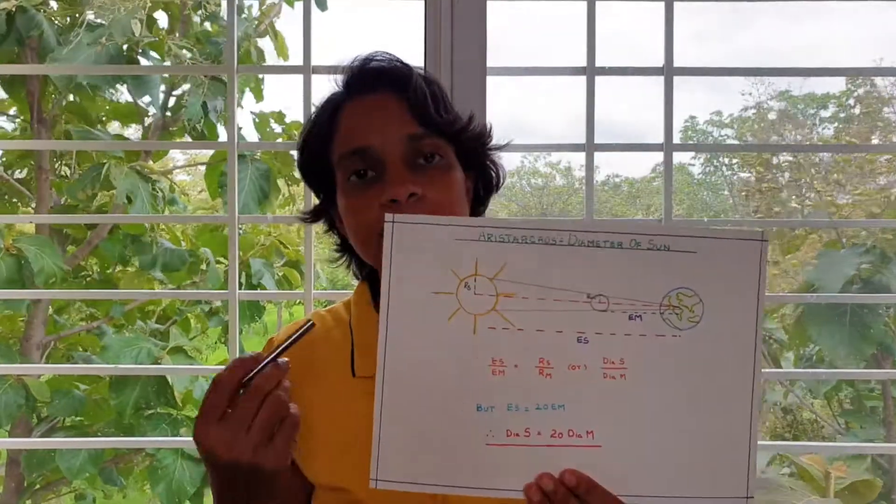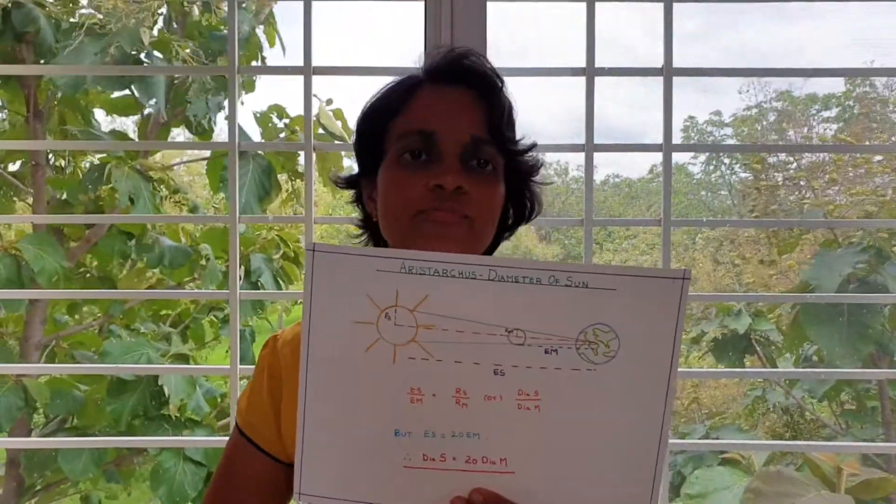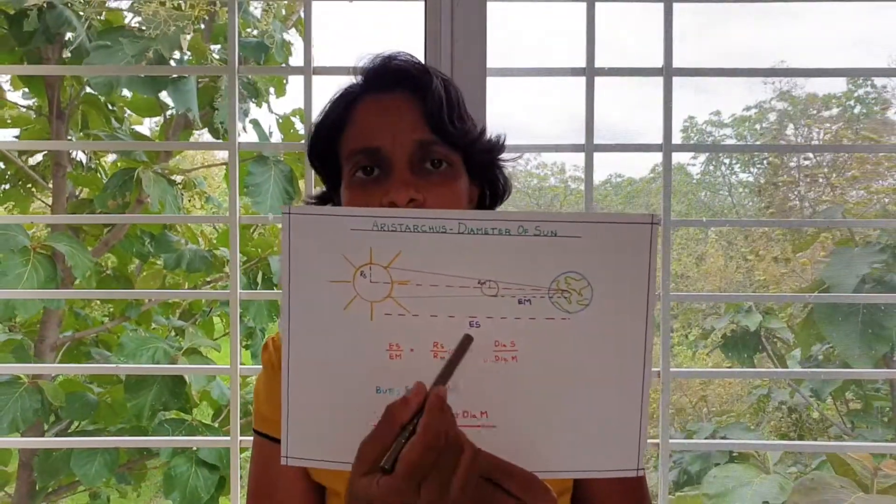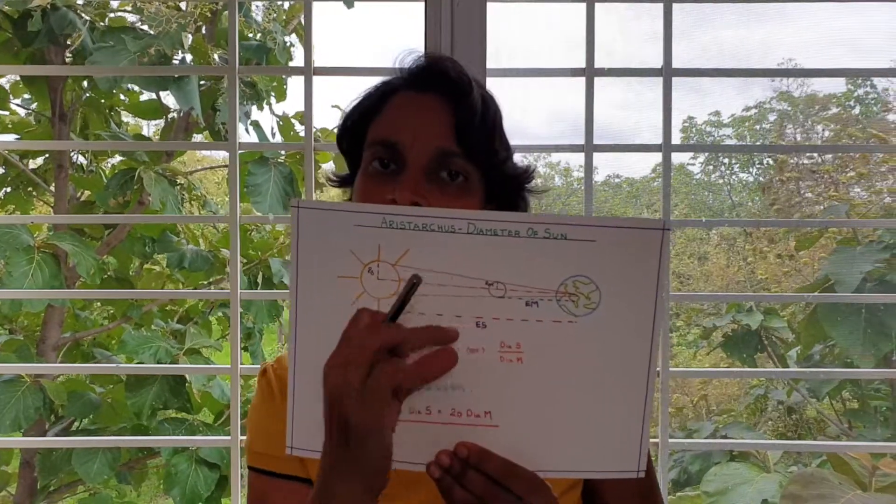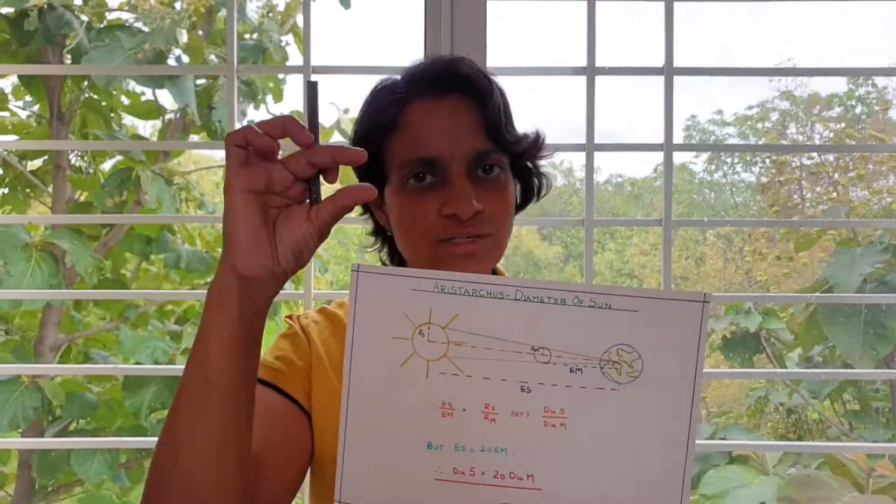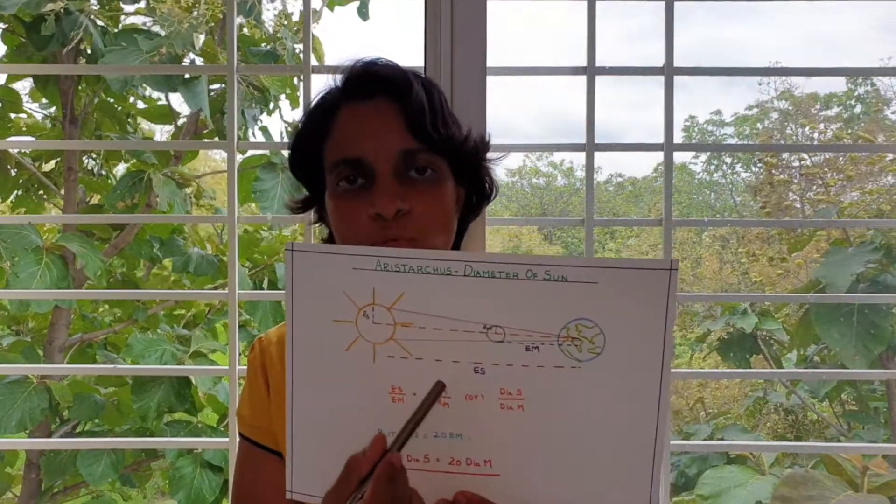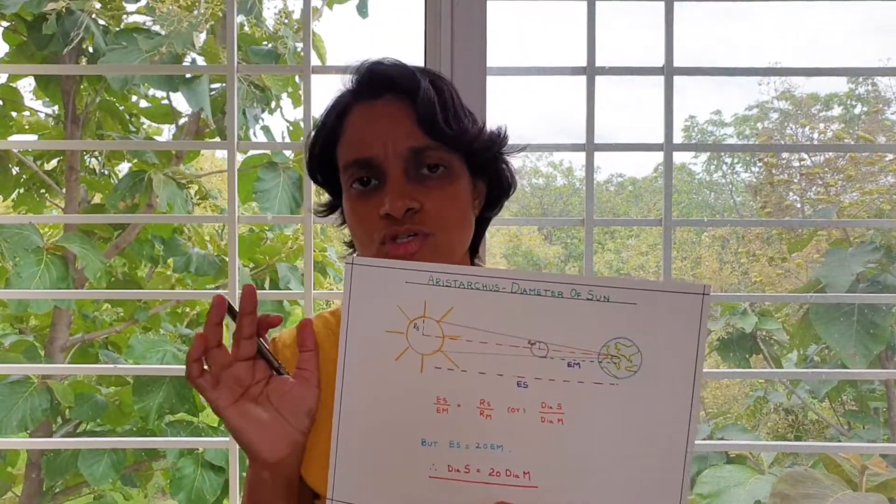And then again Aristarchus came up with a shadow from the center of the earth to the sun spanning the distance of the moon, spanning the diameter of the moon. So when he came up with this, there was very simple logic used behind this.